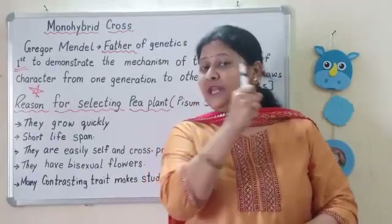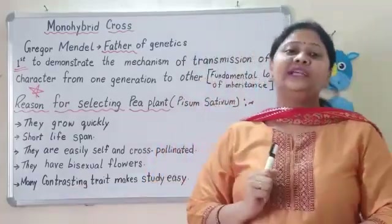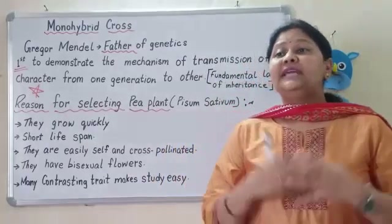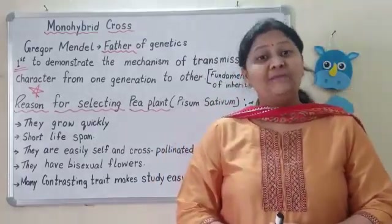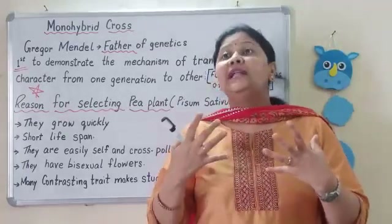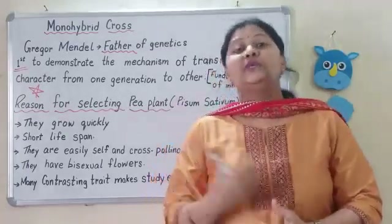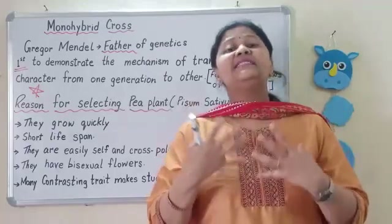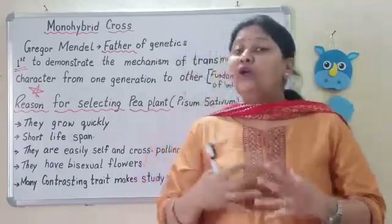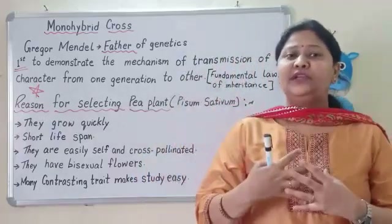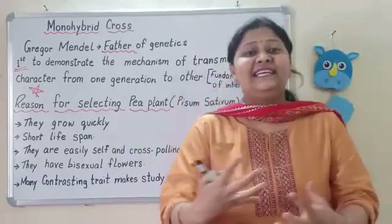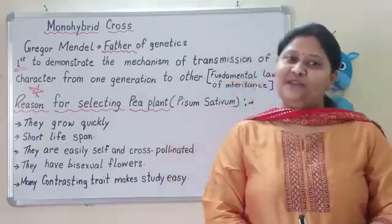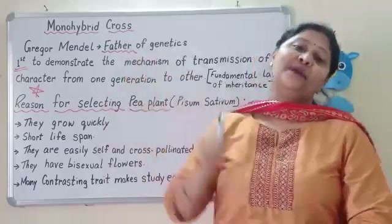One very important part is that the pea plant has many contrasting traits, which makes the study easy. Contrasting means opposite — for example, the height of the plant: tall and dwarf; the color of the flower; and the position of the flower. There are actually seven pairs of contrasting characters, which we will study in detail in class eleven and twelve. The contrasting characters in the pea plant are very easily visible, which is why Mendel selected it. Now we will study about monohybrid cross.